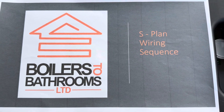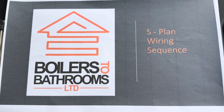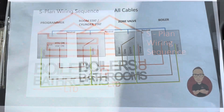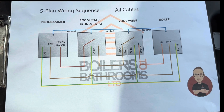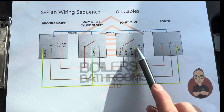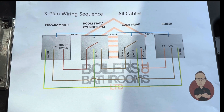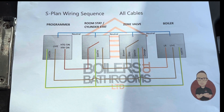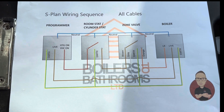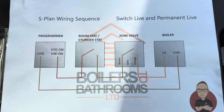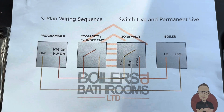We're going to go through the S-plan wiring sequence and fault finding in a bit more depth, with hopefully some easier diagrams to follow. In this diagram you've got all the cables: your earth, your neutrals, your lives, switch lives. On the zone valve we've got all five cables. I'll get rid of the earths and neutrals now to make it look a little bit easier to follow, so we've got our permanent lives.